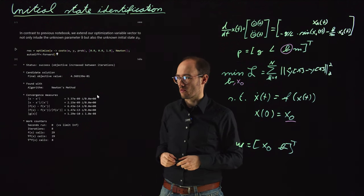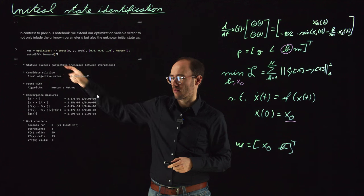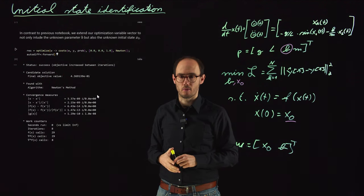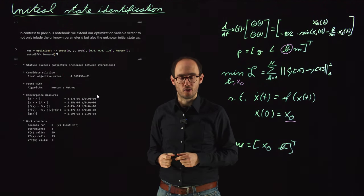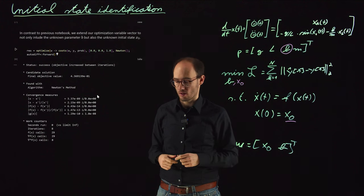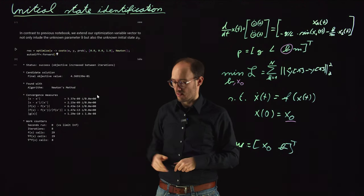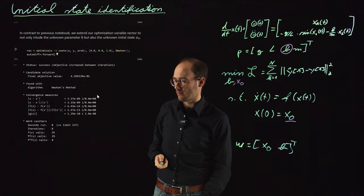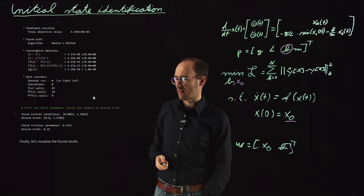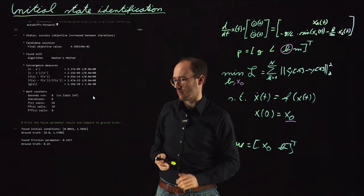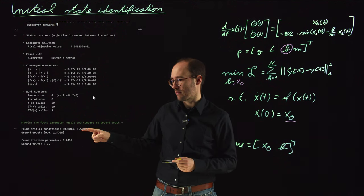Then we let the Newton solver run again here with the autodiff in the forward mode because we can basically directly propagate the gradient through the cost function and the ODE solver itself. And as we can see here obviously the optimization run was successful.